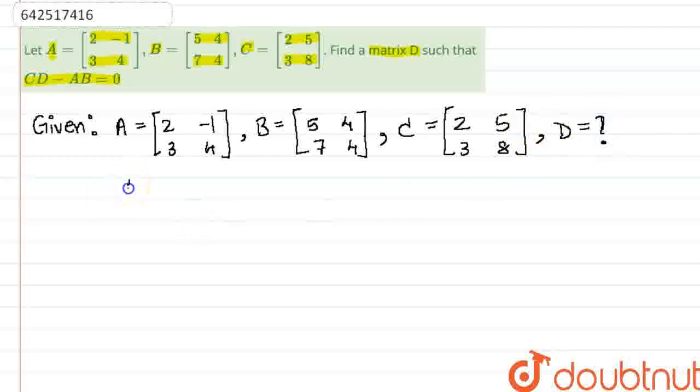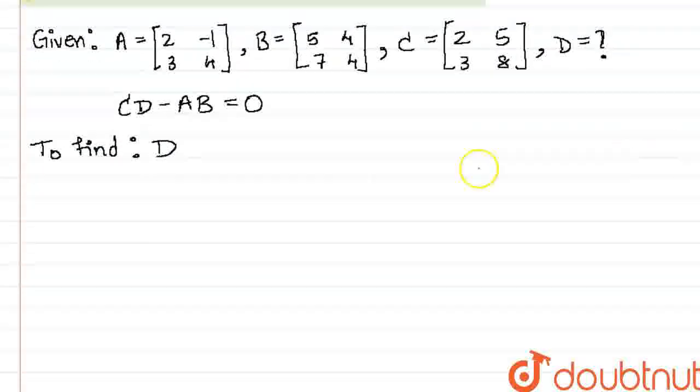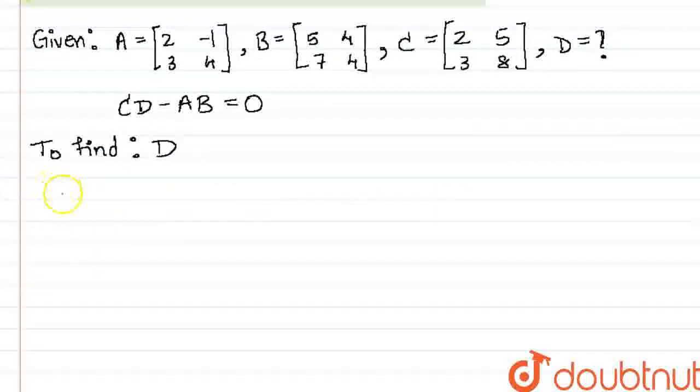What we do know is that CD minus AB is the null matrix. We are supposed to find the matrix D. Let us start by rearranging the equation that is given to us. CD minus AB is the null matrix. Let us add AB to both the sides. Then we get CD is equal to AB.